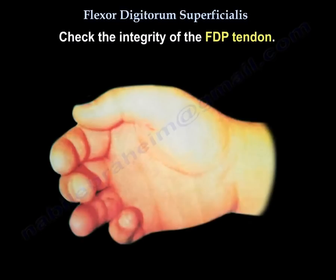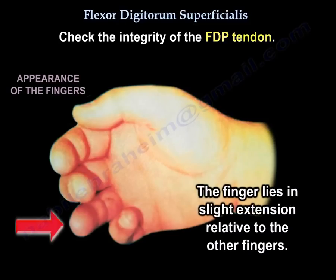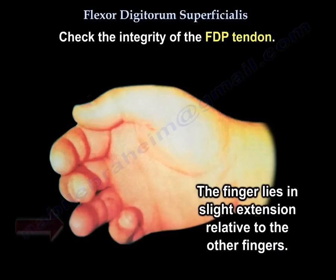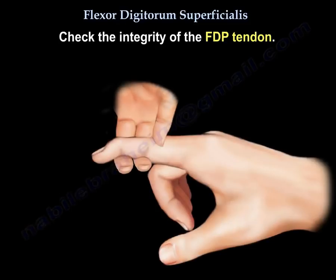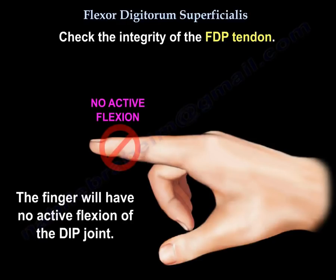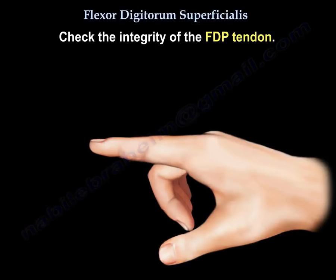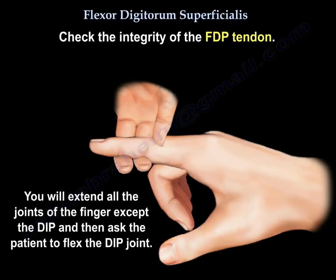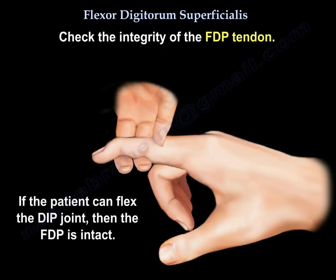To test for the flexor digitorum profundus: the finger lies in slight extension relative to the other fingers, and the patient will have no active flexion of the DIP joint. You extend all the joints of the finger except the DIP, then ask the patient to flex the DIP. If the patient can flex the DIP, then the profundus is intact.